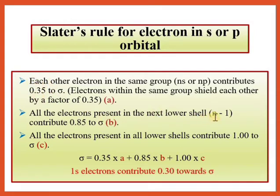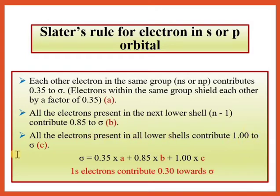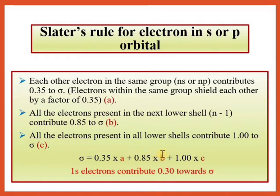Electrons in the (n−1) orbitals contribute 0.85 each toward sigma. All remaining inner orbitals — whether n−2, n−3, etc. — contribute 1.0 each. So the formula for sigma becomes: σ = 0.35a + 0.85b + 1.0c, where 'a' is the number of other electrons in the same ns/np group (excluding the electron of interest), 'b' is the number of electrons in (n−1) orbitals, and 'c' is the number of electrons in all inner orbitals.